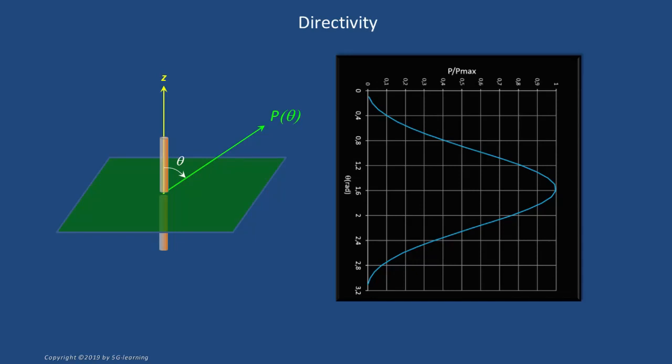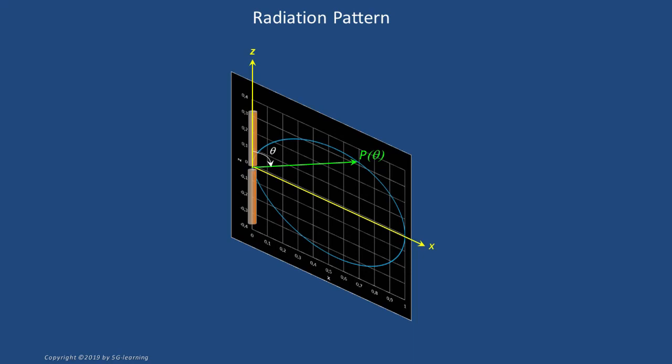This graph shows that the radiated power density changes significantly with the given direction, reaching its maximum at θ equal to π over 2 radians. No energy is radiated in the z direction. In other words, the radiated energy is concentrated on the orthogonal plane, and in this sense the antenna shows directivity. Note that it is common practice to represent the radiated power density in polar coordinates.